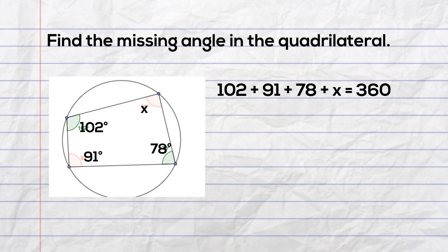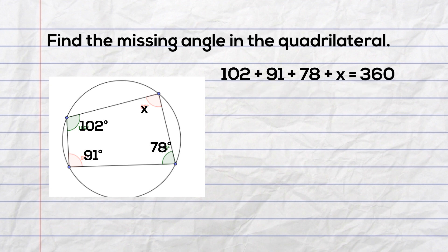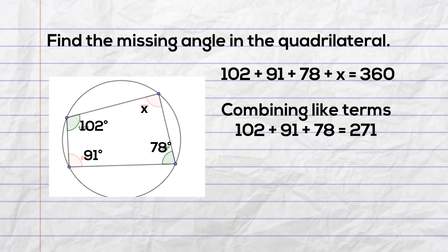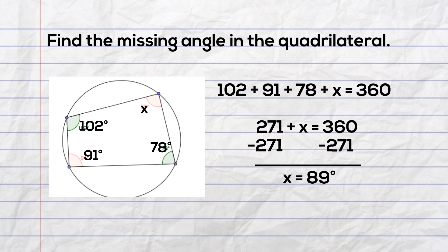Now we can start by combining like terms. After combining like terms we are left with 271 plus X equals 360. We can isolate the variable by subtracting 271 from both sides. After subtracting, we are left with X equals 89. The missing angle is 89 degrees.